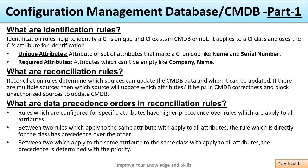What are the identification rules? Identification rules help to identify whether a CI is unique and whether it exists in the CMDB or not. It applies to a CI class and uses CI attributes for identification. Unique attributes are an attribute or set of attributes that make a CI unique — for example, name and serial number are unique attributes in the CI or CMDB for every class.